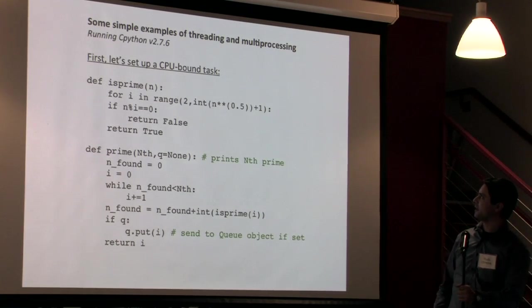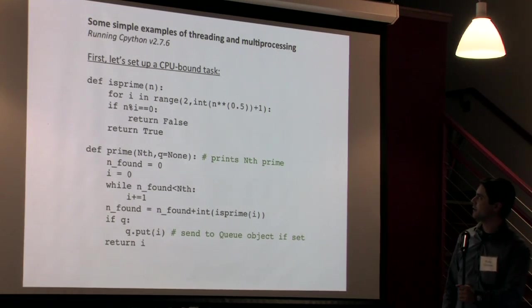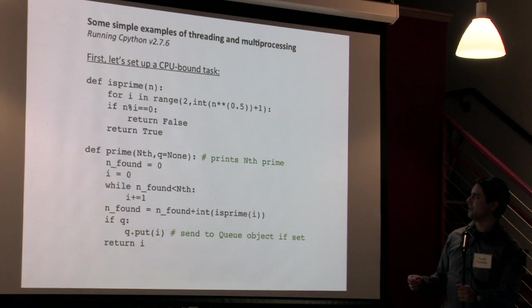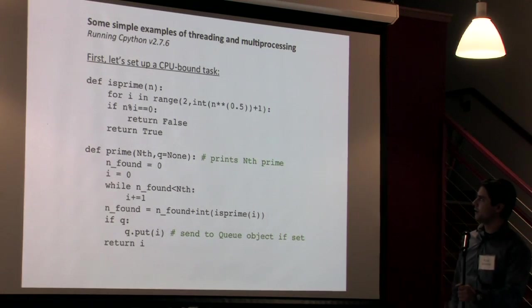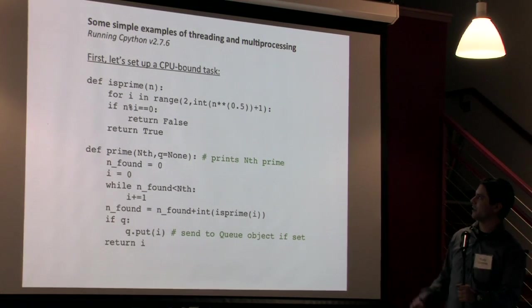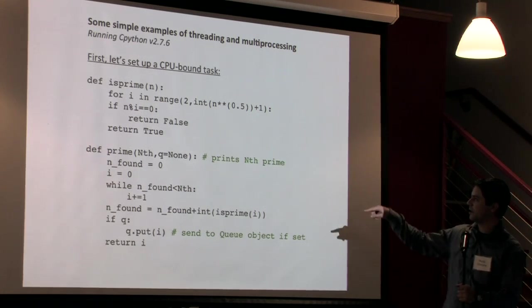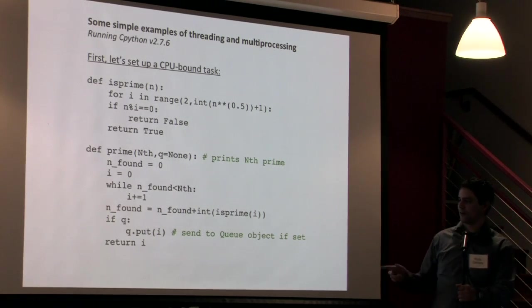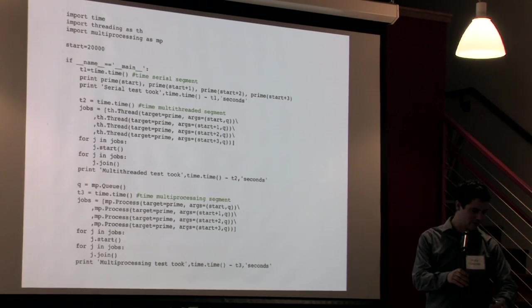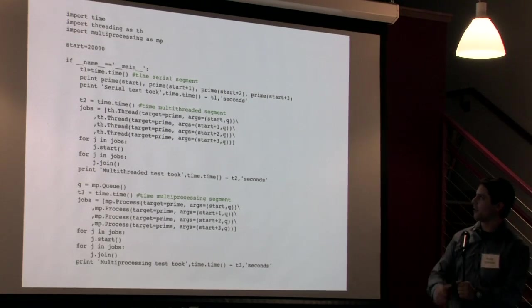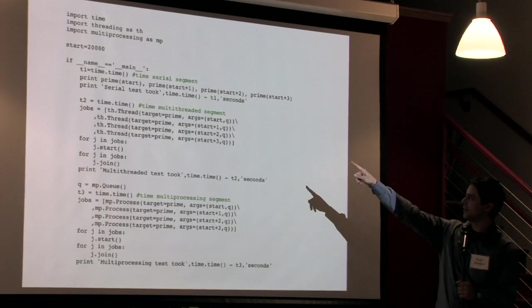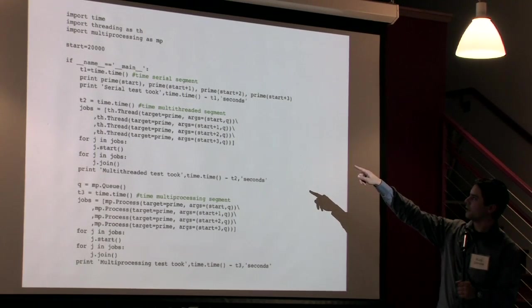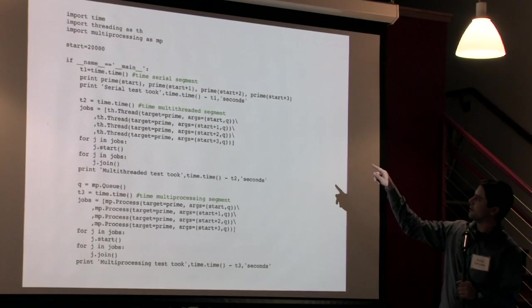So let's look at some simple examples of this comparing threading and multi-processing and again I'm just running this in CPython using the latest version of Python 2. So what I've done here is first I come up with a CPU bound task. I've just written some code here that does a brute force calculation of the nth prime number and you know definitely a very CPU bound problem. So this is some code I've written for this.